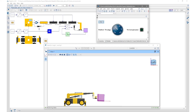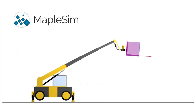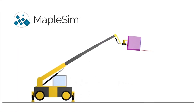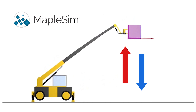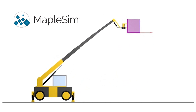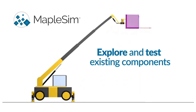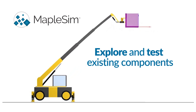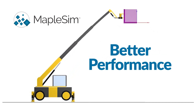This MapleSim model of a reach truck equipped with a telescopic boom was used to develop a control strategy to compensate for the deflection experienced in the boom when under load. MapleSim also allows you to explore and test your existing equipment and to push it to perform better.